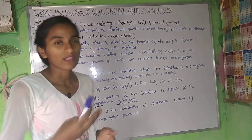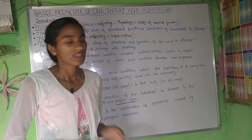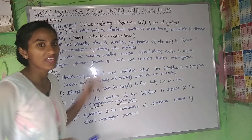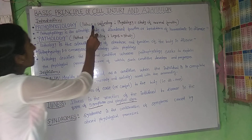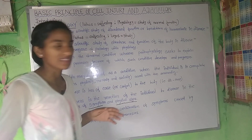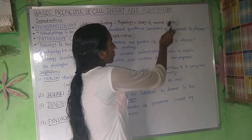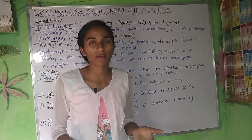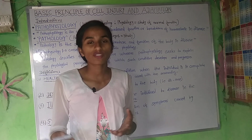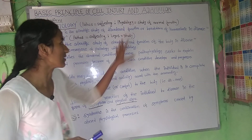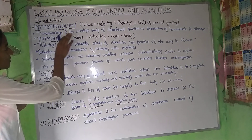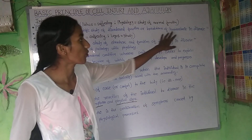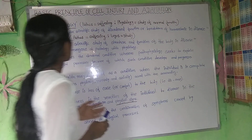Students are often confused about pathology and pathophysiology, so here is the basic understanding to help you differentiate between them. Pathos means suffering or disease, and physiology means the study of normal function. Pathophysiology is the scientific study of disordered function, or the breakdown of homeostasis and disease.